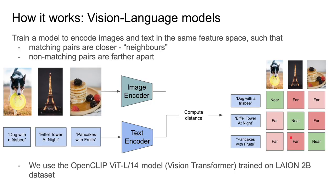Hi, I'm Horace and I will now explain how WISE works. WISE uses vision language models, which map images and text to the same feature space, allowing users to search images using natural language. One of the ways these vision language models are trained is by taking pairs of images and their corresponding captions, and training an image encoder and text encoder to map the images and text to feature vectors, such that the feature vectors are close together in feature space for matching pairs and far apart for non-matching pairs.